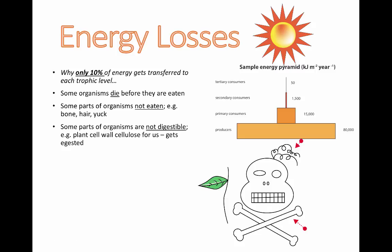Some parts of organisms are just not digestible. When I eat plants, there are carbs in there, but a lot of the plant tissue — like cellulose in the plant cell walls — we can't actually digest. Cellulose is made up of glucose molecules, but my body cannot access that glucose because I don't have enzymes to break down the way glucose is stored in cellulose. So I end up excreting it, which is what dietary fiber is.